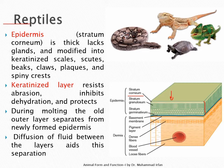The stratum corneum is thick, contains keratin, and protects the animal from desiccation and ultraviolet light. It lacks glands and is modified into keratinized structures such as scales, scutes, beaks, claws, plaques, and spiny crests.